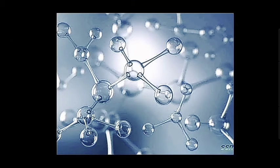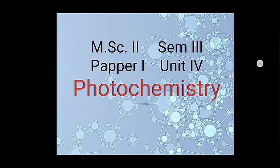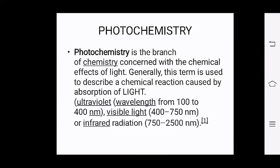Today we are going to start our second lecture of photochemistry, but before starting we will take a review of the last lecture. In the last lecture we discussed what is meant by photochemistry — photochemistry is a branch of chemistry concerned with the chemical effect of light. Such reactions which are brought about by light are known as photochemical reactions, occurring in ultraviolet light, visible light, or infrared.